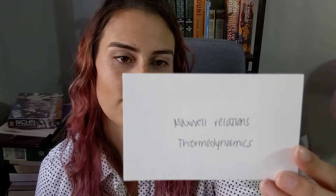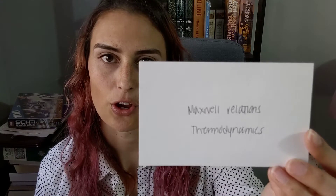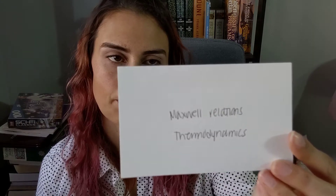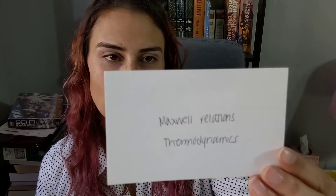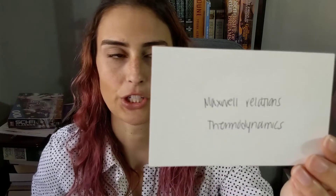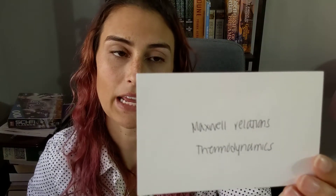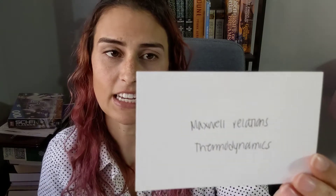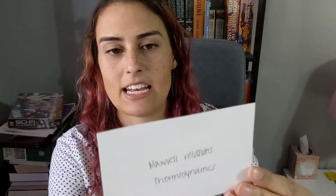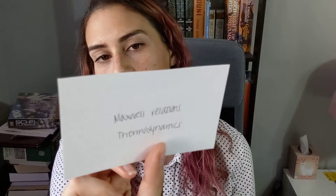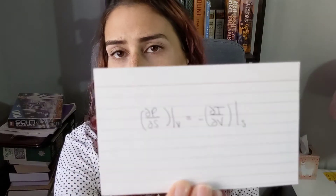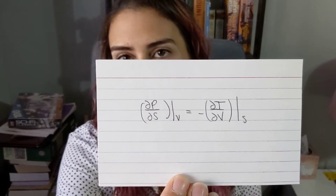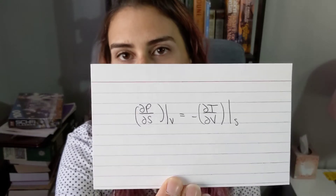The Maxwell relations for thermodynamics: the partial derivative of P with respect to S at constant V is equal to the negative partial derivative of T with respect to V at constant S.